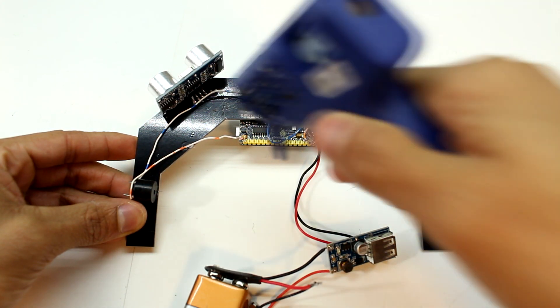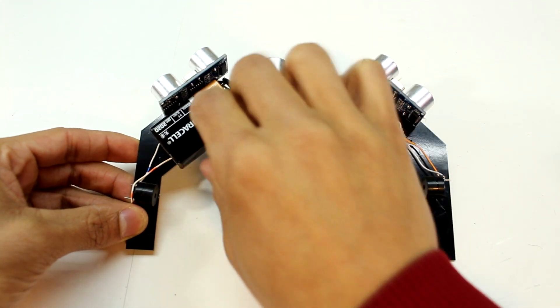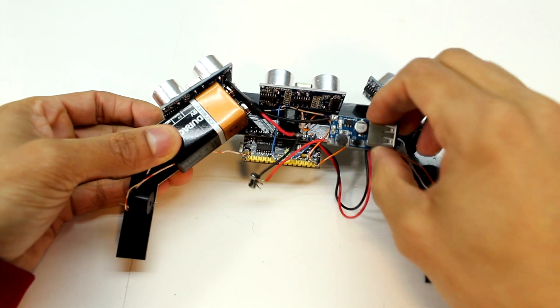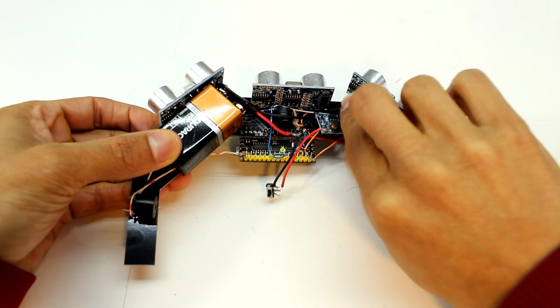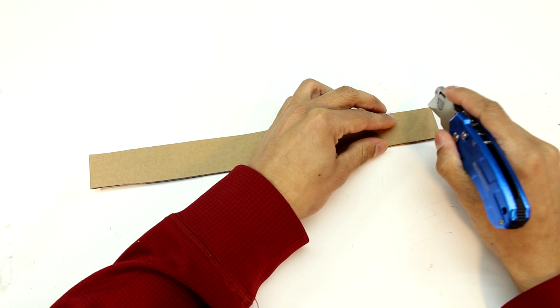Now once we glue this all into place, the only other electrical part left is to program the Arduino. For that all you have to do is plug the Arduino in with the cord we saw before to your computer and load the code onto it. I'll leave the code in the description of the video.